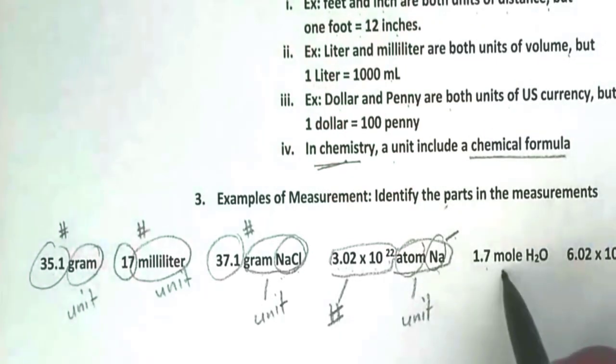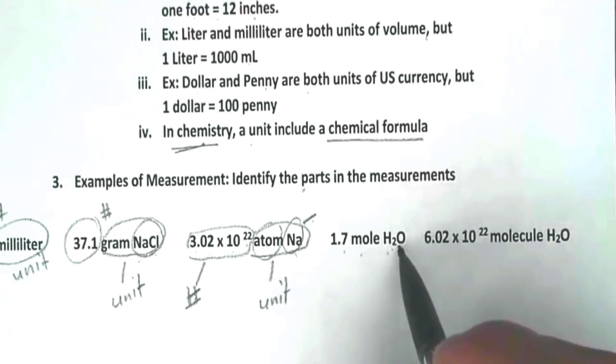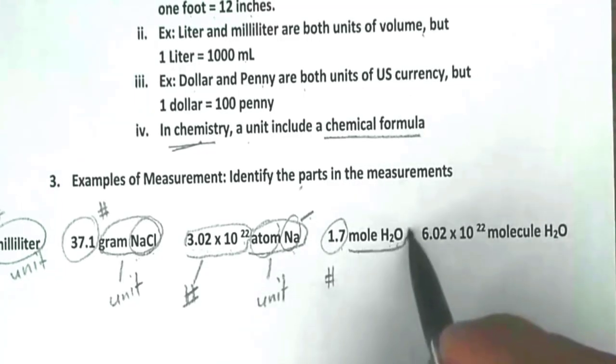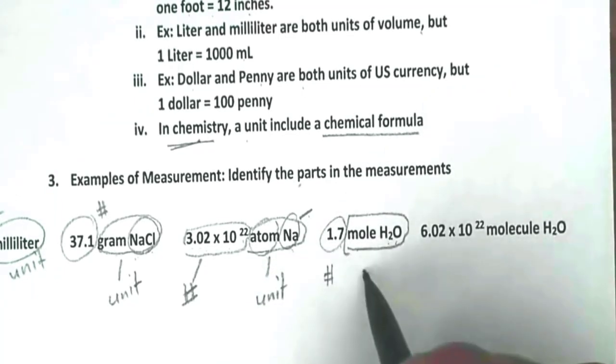Then we have 1.7 mole of H2O, dihydrogen monoxide. 1.7, that would be your number, and this mole of H2O, that would be your unit. And the chemical formula is dihydrogen monoxide.